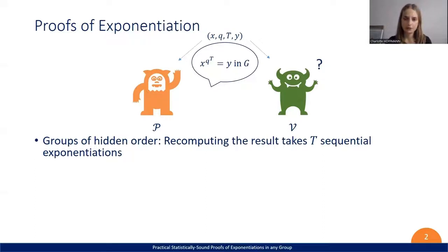In groups of hidden order, recomputing the result takes t sequential exponentiations. We don't know of a significantly faster algorithm to compute it, but we want the verifier to be much more efficient. To this end, we let the prover send a proof of exponentiation or PoE to the verifier to prove correctness of the result.